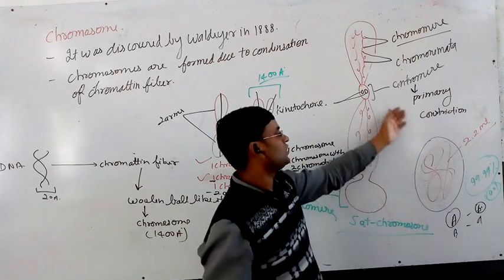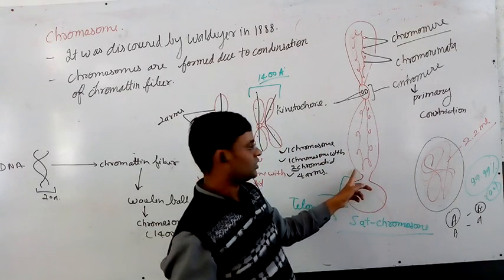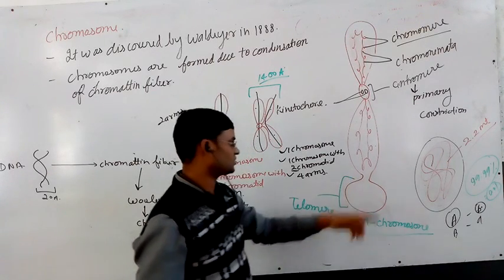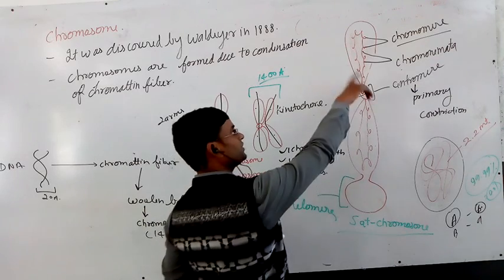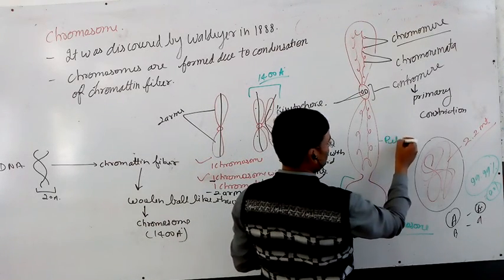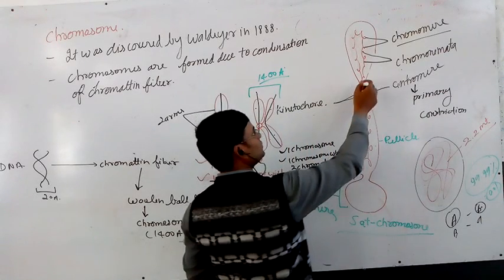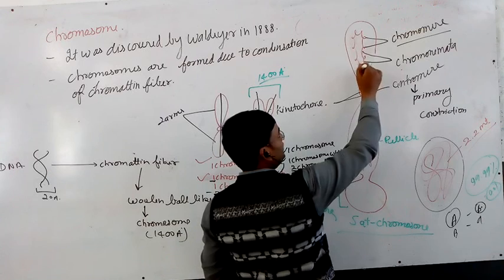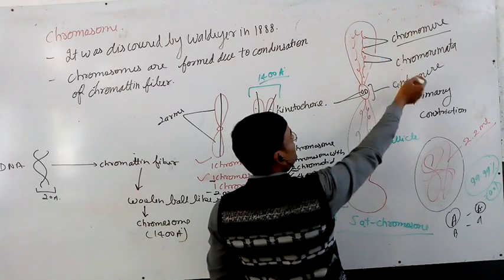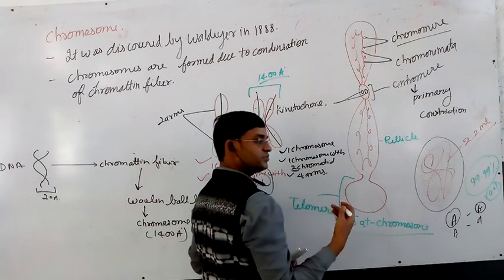Primary constriction is also called primary constriction. If there is one more constriction, then what is the secondary constriction? There is a nucleolar organizing region and that structure is called NOR. This is the essential structure and these structures have somewhere condensed parts and not having condensed parts.